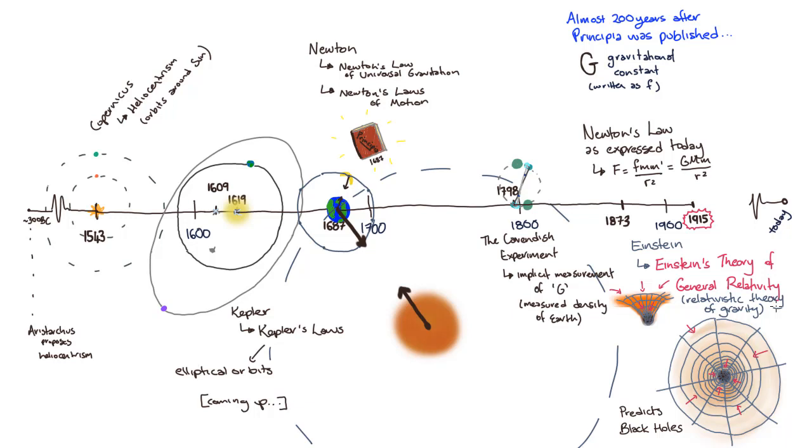Even though Einstein's theory is the most accurate description we have for gravity, both Kepler's laws and Newton's law of universal gravitation remain useful for most situations, and they have the advantage of being much, much easier to apply. We've already examined Newton's law of universal gravitation in detail, so let's look at Kepler's three laws of planetary motion.